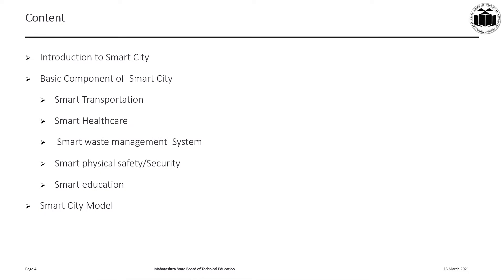We will begin this session with Introduction to the Smart City. Then we will see the Basic Components of Smart City, which include Smart Transportation, Smart Health Care, Smart Waste Management System, Smart Physical Safety or Security, and Smart Education. After that, we will discuss the Smart City Model.